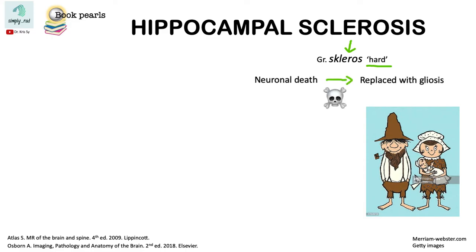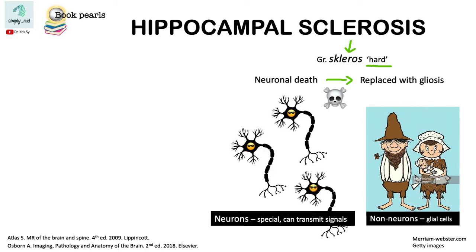Applying that to Hippocampal Sclerosis, it refers to the abnormal replacement of Hippocampal neurons by the supporting cells. While we appreciate that these glial cells are trying to help, they cannot do what neurons are supposed to do.